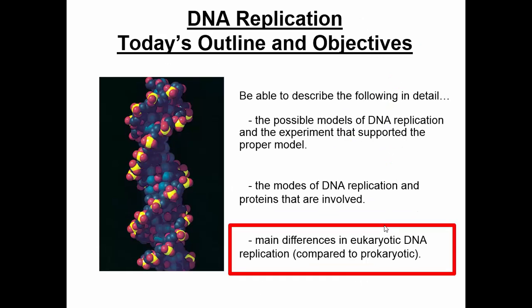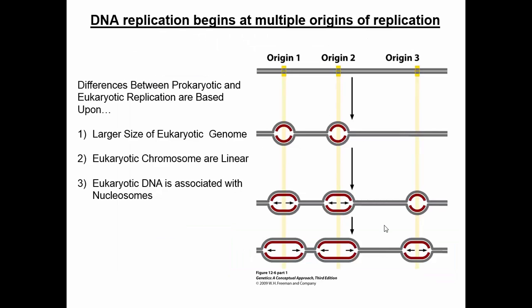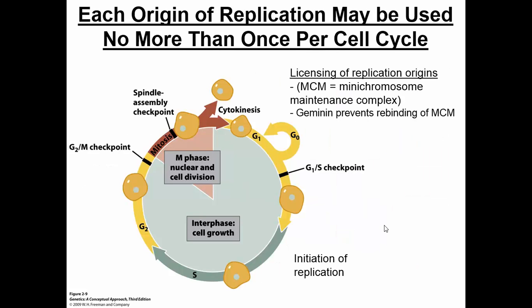What are the main differences between eukaryotic and prokaryotic DNA replication? There are three main things: first, eukaryotes have a larger genome, so they need multiple origins of replication to replicate the DNA within the time available in the cell cycle. Second, eukaryotic chromosomes are linear. Third, eukaryotic chromosomes are associated with nucleosomes, which have to dissociate and reassociate to allow DNA replication to happen.